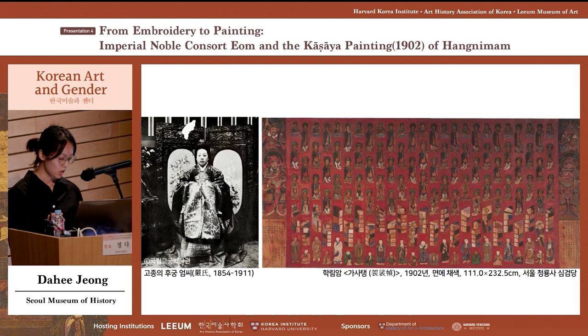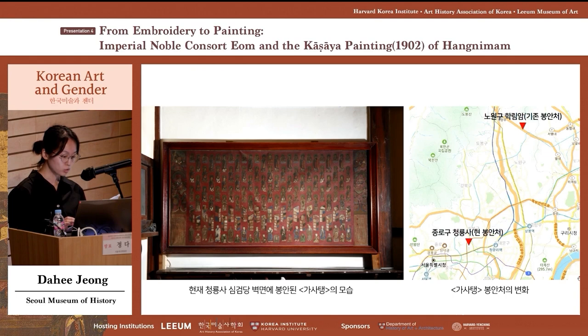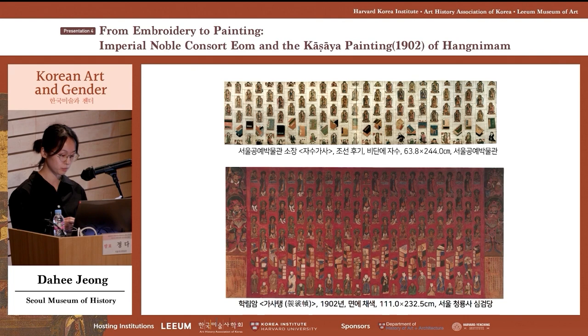The presentation seeks to reveal the intentions of Lady Eum, the consort of Gojong, when she commissioned Ga Sa Taeng at Hangnimam. It was produced at Suraksan Hangnimam in 1902 and is enshrined in Cheongnyongsa, Jongno-gu, Seoul. It is a painting where Ga Sa, the robe of monks, is reproduced in real life size. It is special in that the theme of the painting is Ga Sa and it replicates a real object.